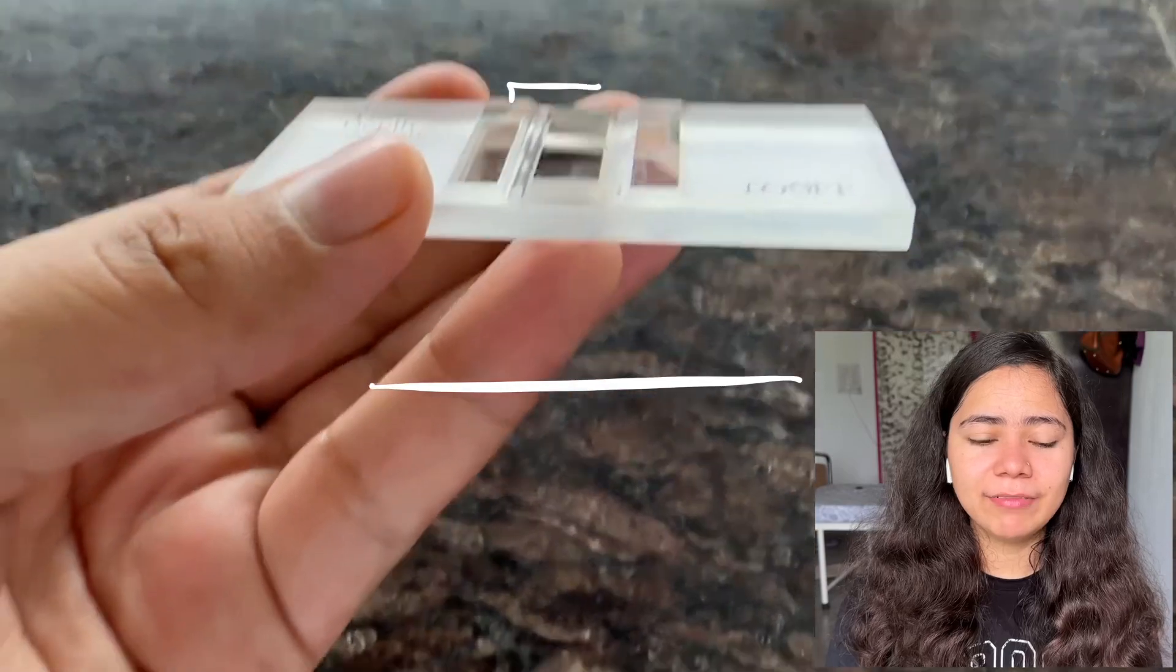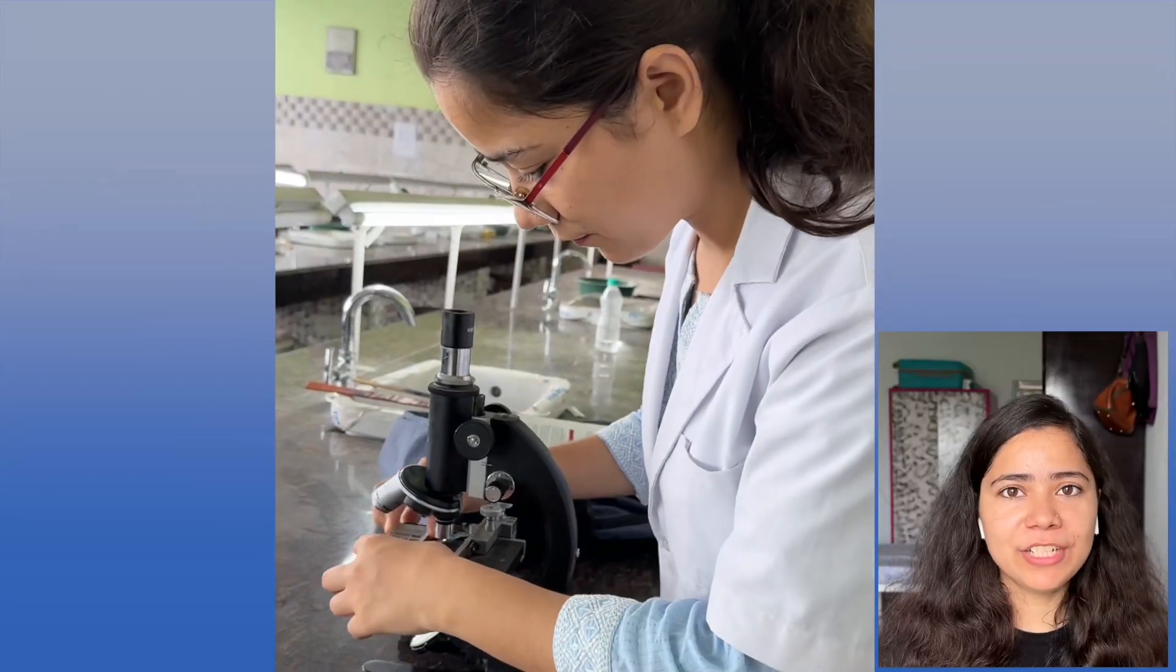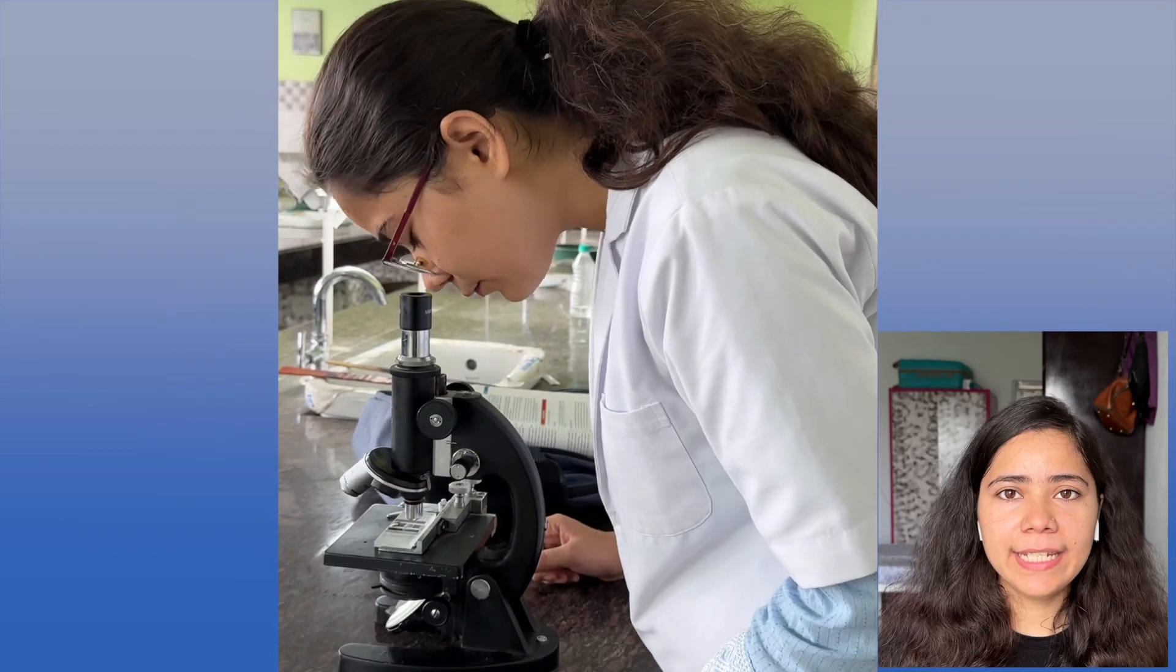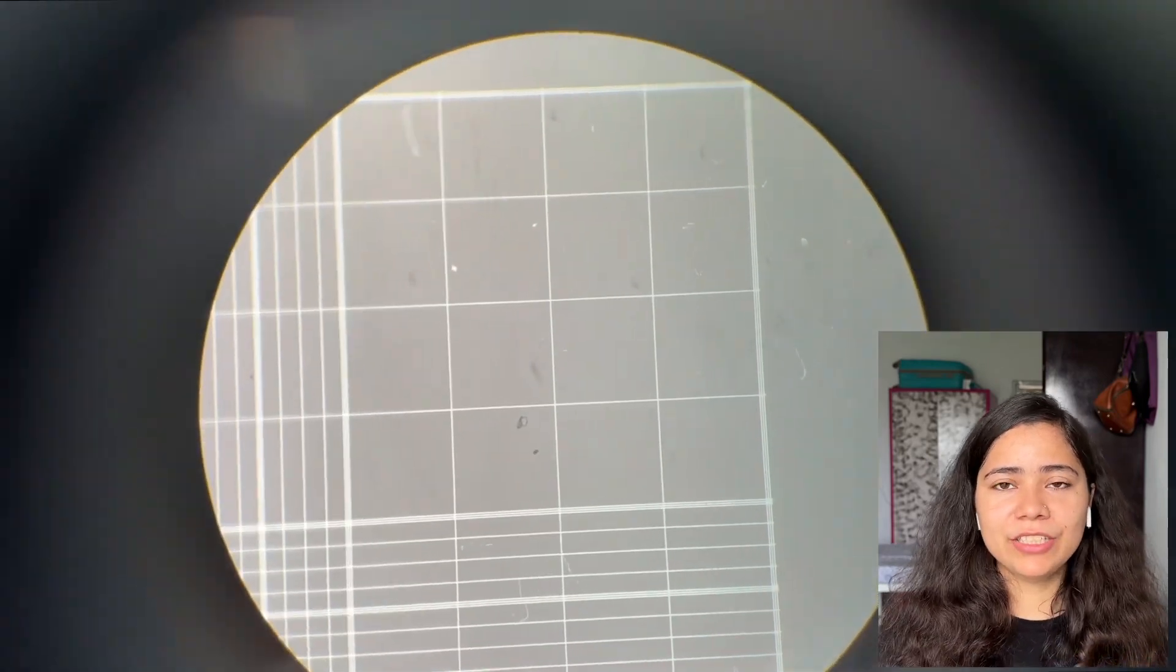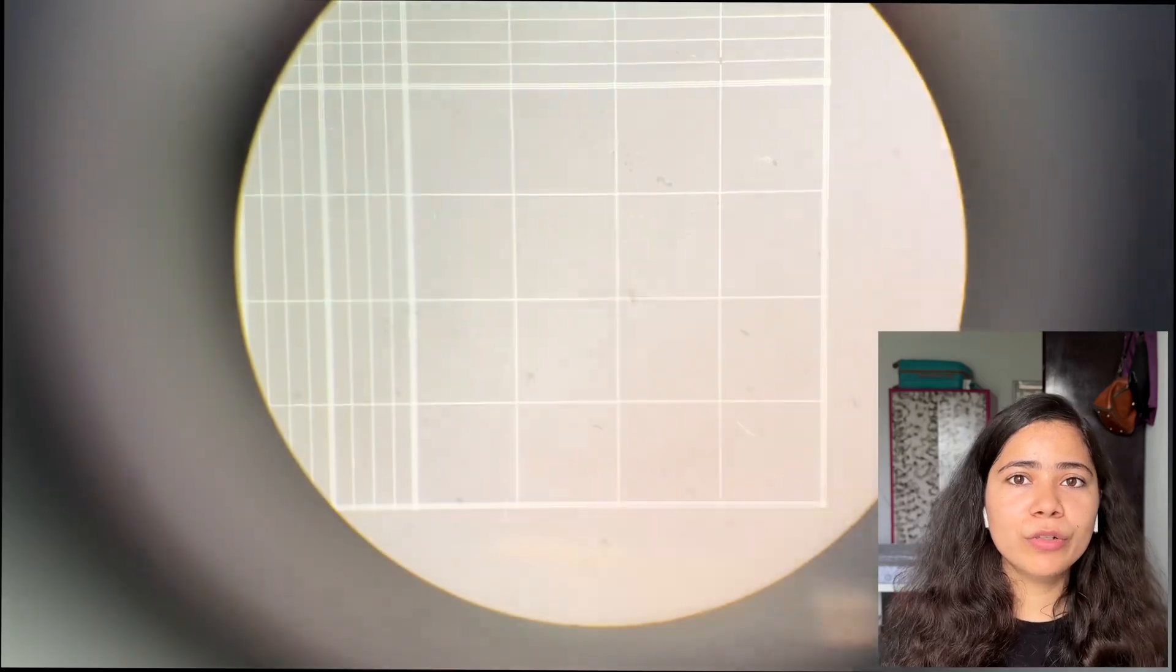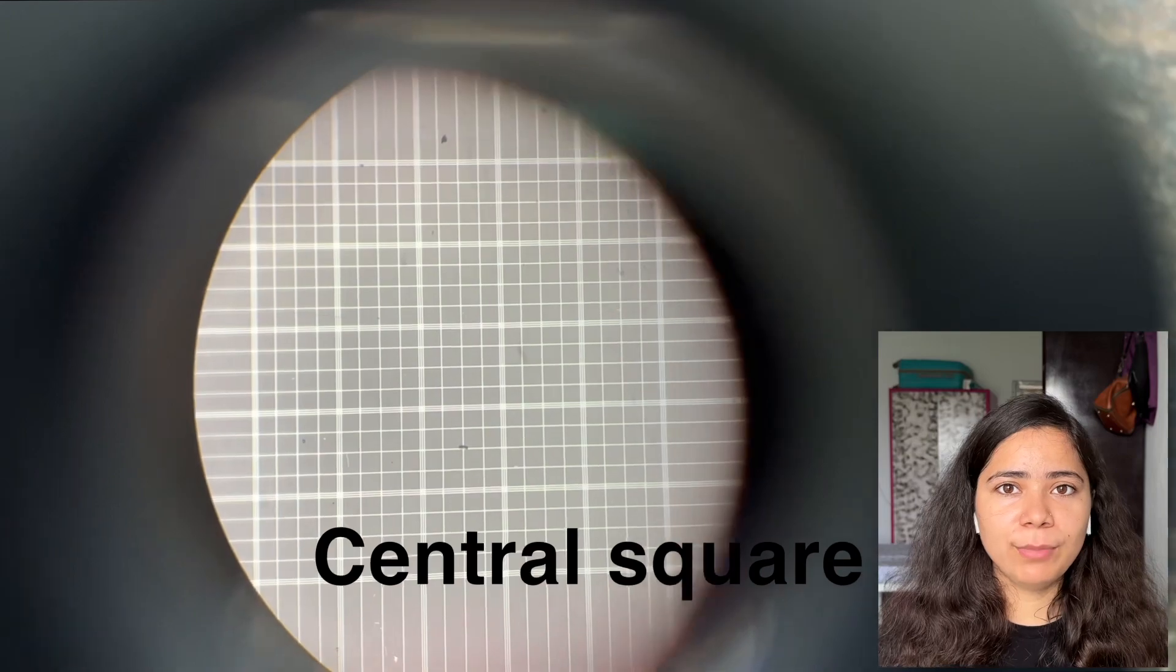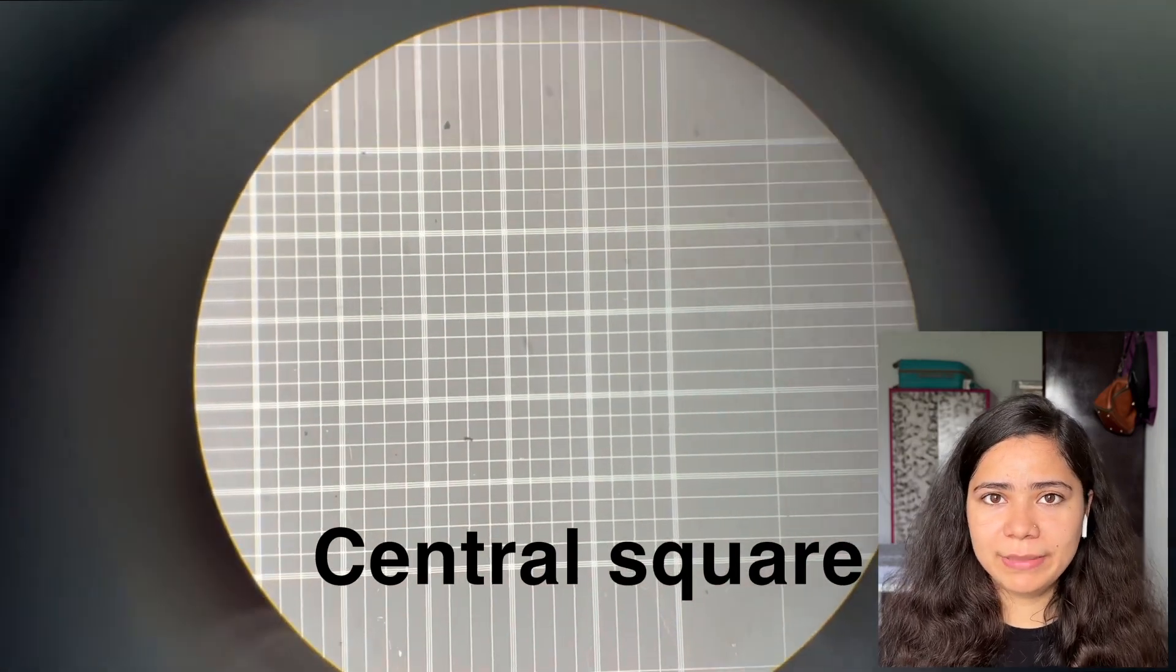The Neubauer chamber is divided into two central platforms by an H-shaped groove. Let's focus the Neubauer chamber in the microscope at 10x. This upper right square is used for WBC count, then the upper left, then lower right, then lower left. And this is the central platform that is used for total RBC count.